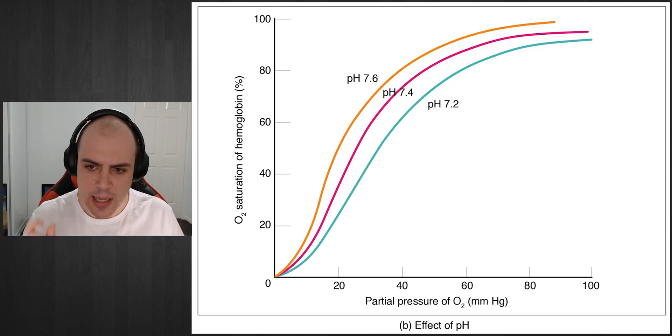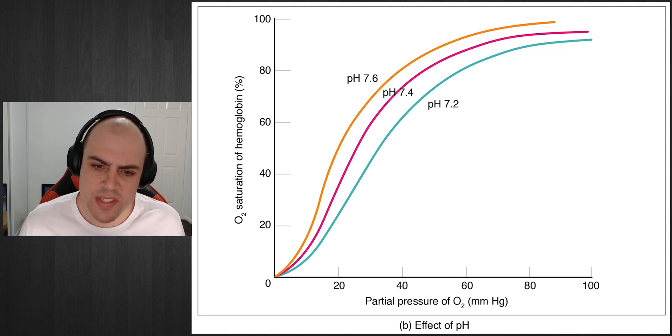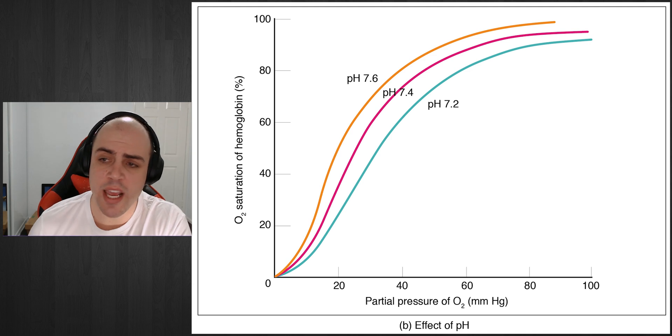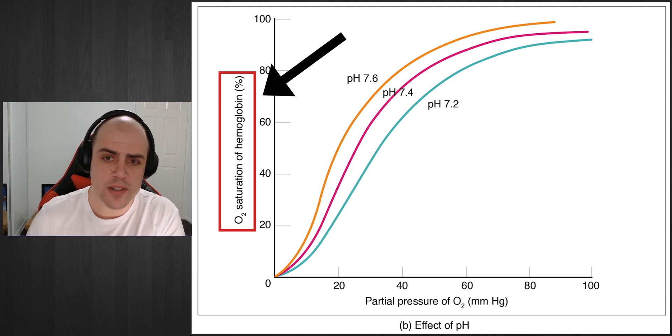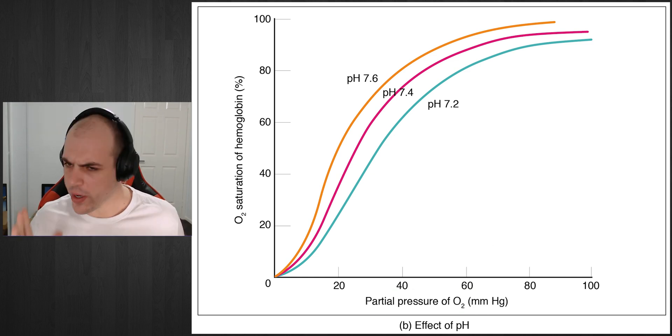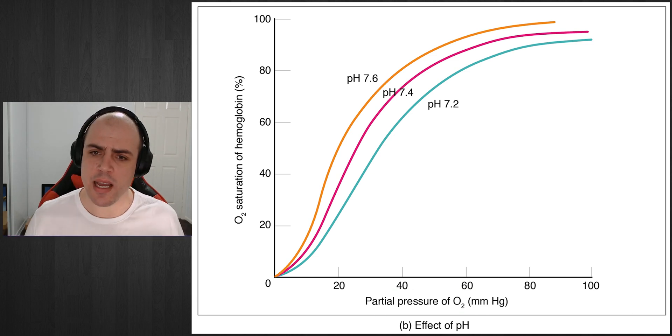Now let's look a little bit more closely at the Bohr effect. What we see here is a nice sigmoidal curve graph, and what this graph is essentially showing us is the change or the difference in oxygen saturation versus partial pressure of oxygen when we're changing the pH.